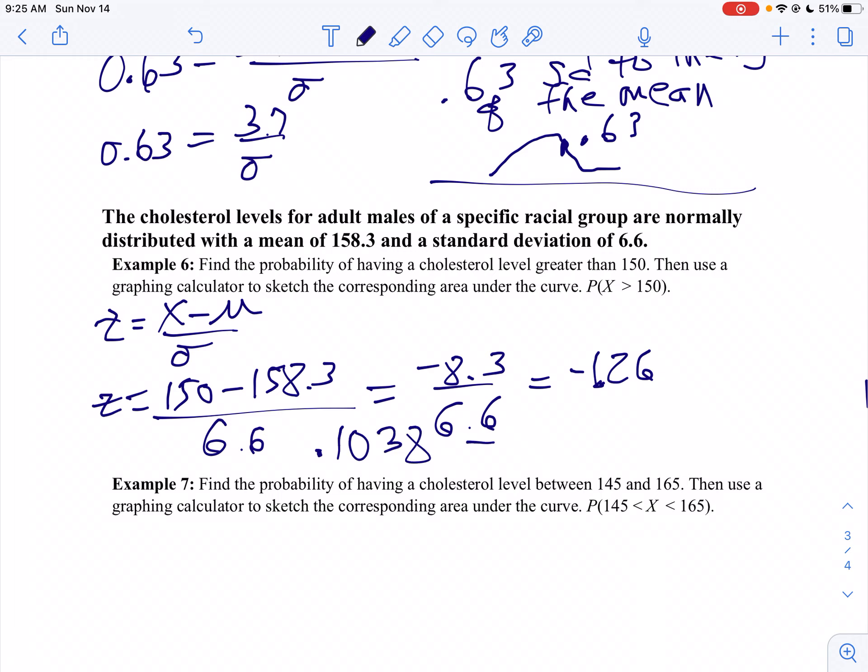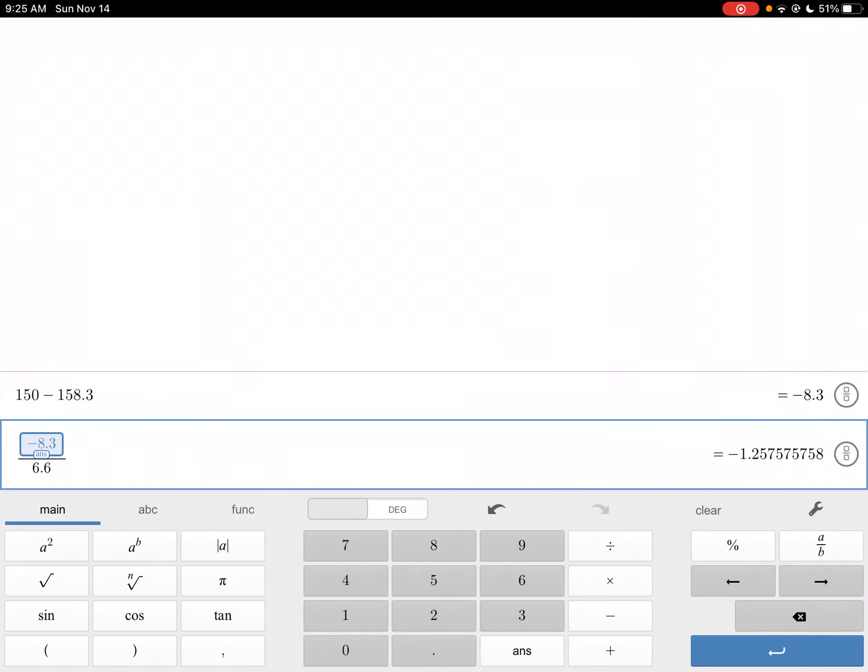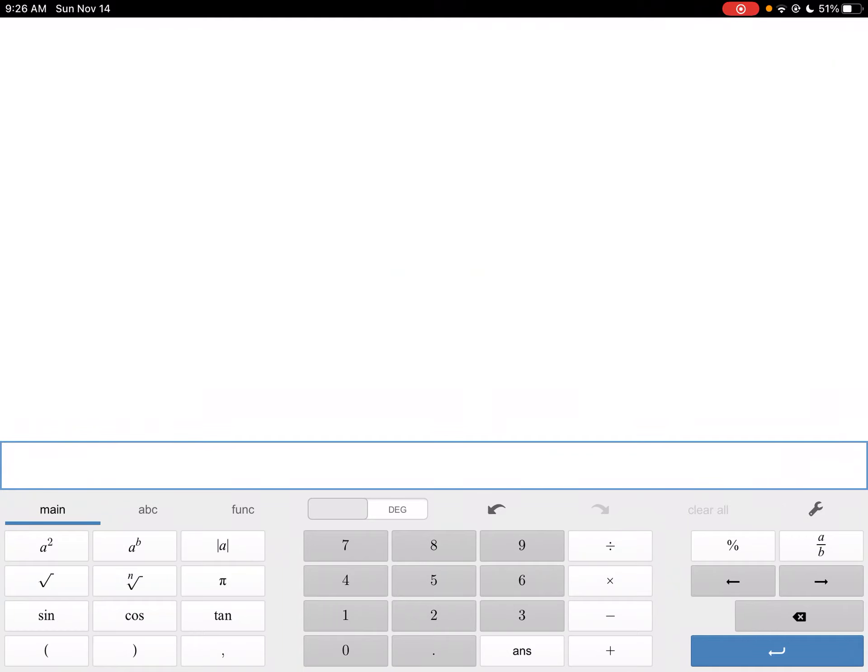But I want to find that actual value. So I take 1 minus that because I want to be to the right. So 1 minus 0.1038, and we get about 0.8962. So you have about a 90% chance of being greater than.